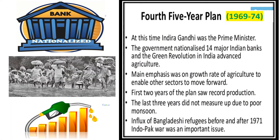The Fourth Five-Year Plan ran from 1969 to 1974. During this plan, Srimati Indira Gandhi was the Prime Minister of India. The main intention of setting the goals of this plan was that India should become self-reliant, the government should develop the basic industries, and increase the speed of economic development.